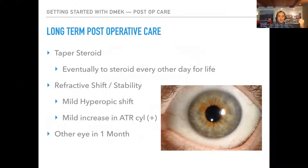One of the benefits of DMEK is less risk of rejection compared to DSAEK. Long-term, we get patients down to every-other-day steroids for life. These patients see well very fast — they want to have the other eye done in a month or so. They normally don't want to wait like with DSAEK or PK where it takes months to rehab the vision.